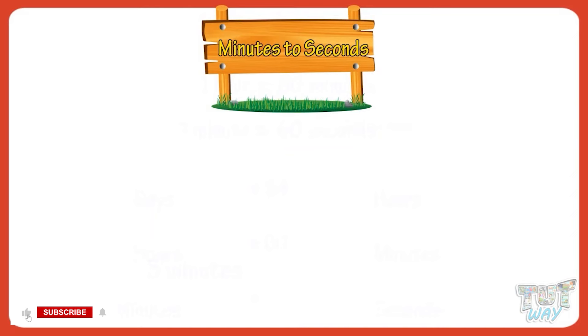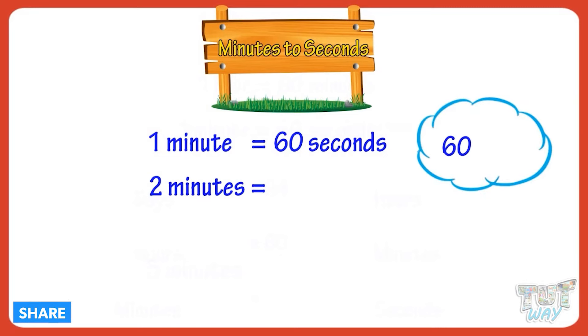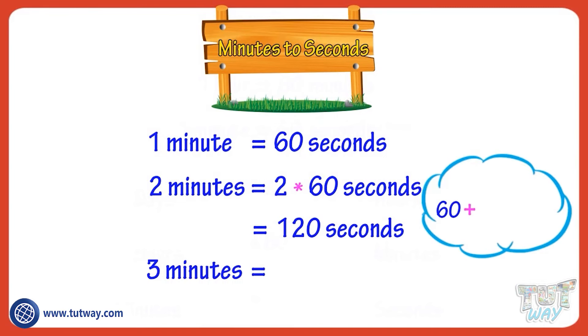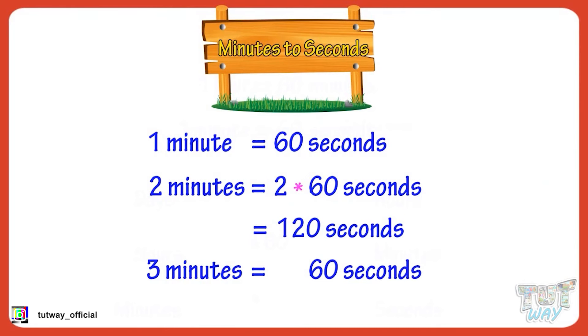Let's see. One minute equals 60 seconds. Two minutes equals 60 plus 60 or 60 multiplied by 2 equals 120 seconds. Three minutes equals 60 plus 60 plus 60 equals 180 seconds.